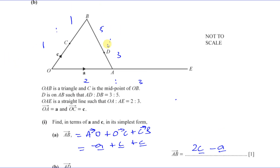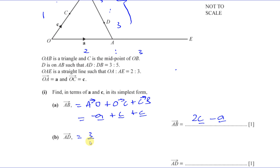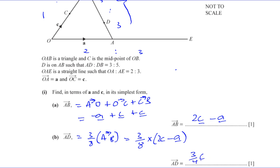Then it asks for the vector from A to D. Now A to D is a fraction of A to B. AD to DB is 3 to 5, so there are 8 parts altogether, meaning A to D is 3 eighths of A to B. So A to D equals 3 eighths times (2C minus A), which gives 3 over 4 C minus 3 over 8 A.